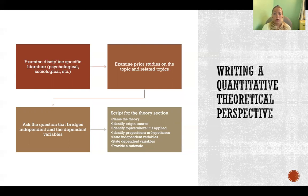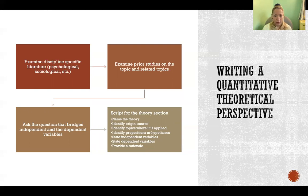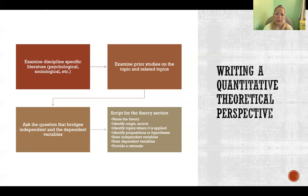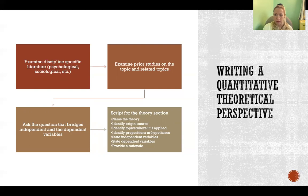When you're ready to write, name the theory and give credit to where it originated — whoever is the author who first discussed that theory. Identify different topics where it has been applied in previous research, whether in other disciplines or within your own. Identify propositions or hypotheses based on the theory, state the independent and dependent variables based on that theory, and give a rationale for why that theory is the best choice for your study — referencing the literature to discuss why it has or hasn't worked in different disciplines and why it is the most appropriate for this particular study.